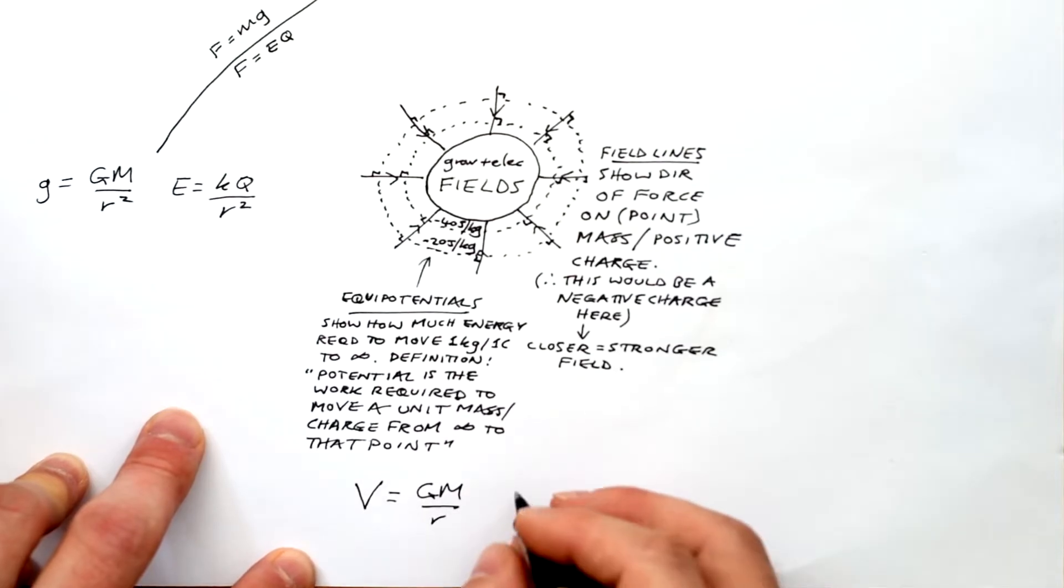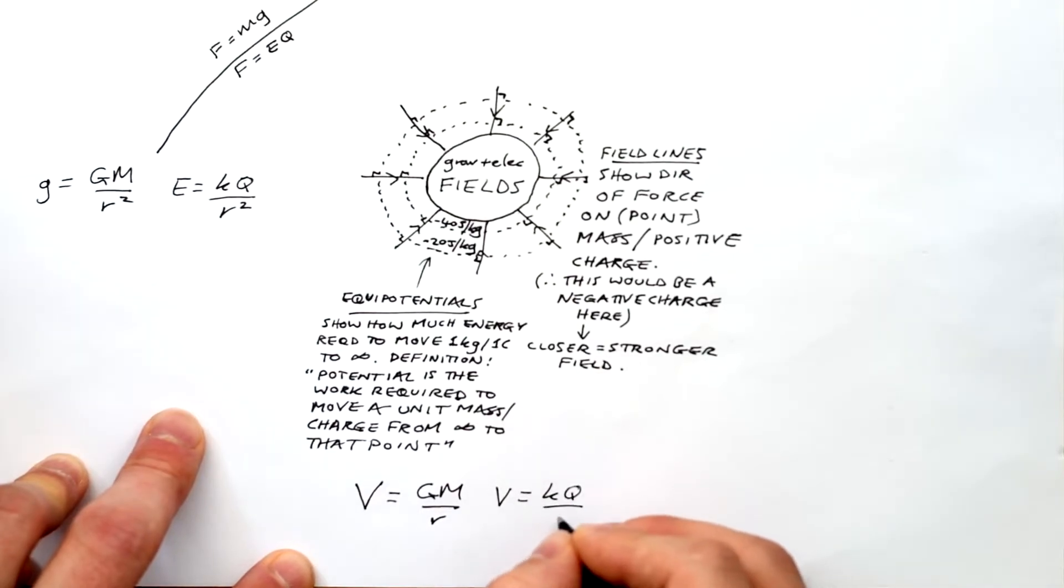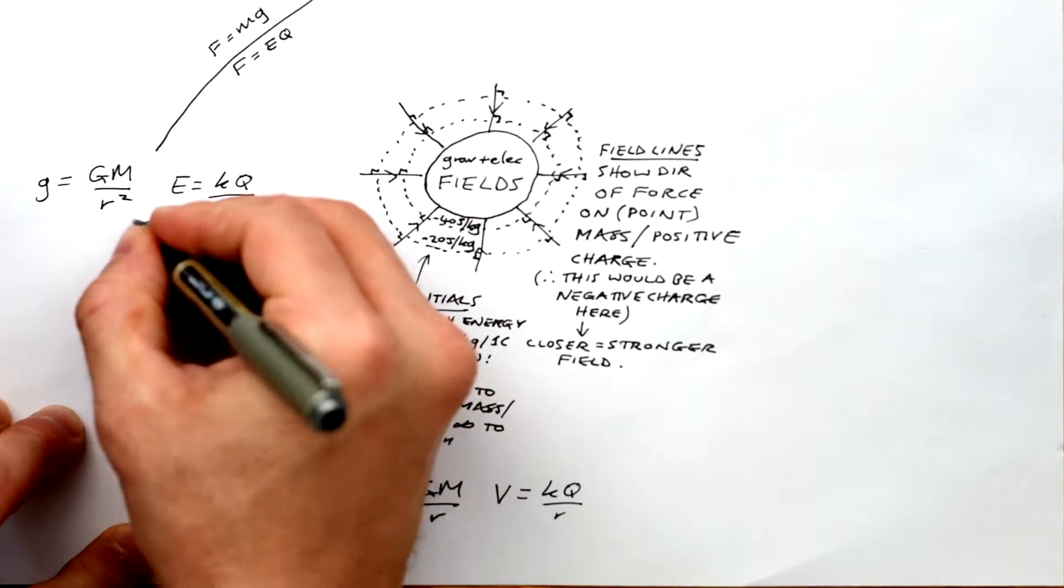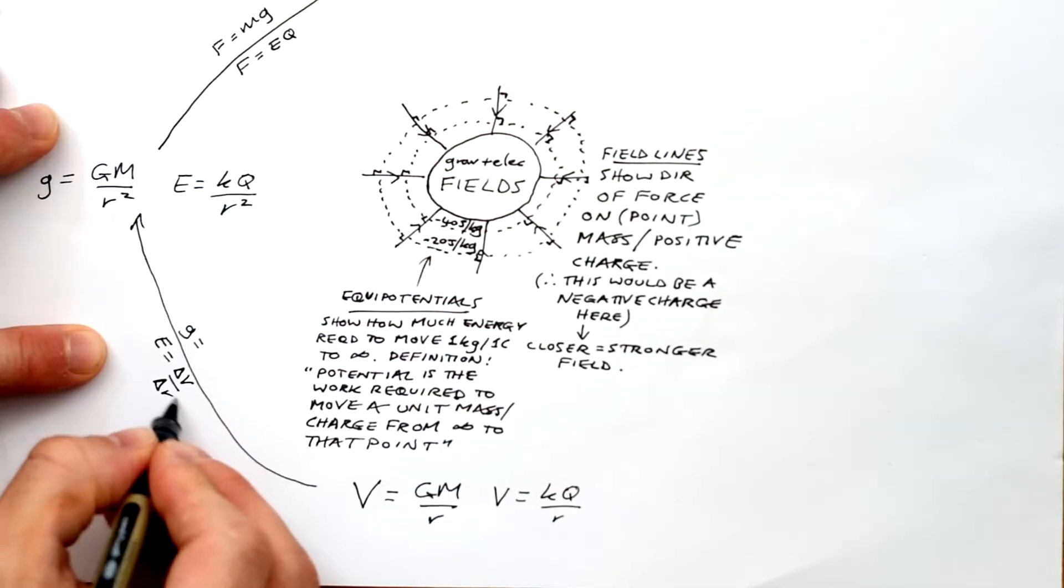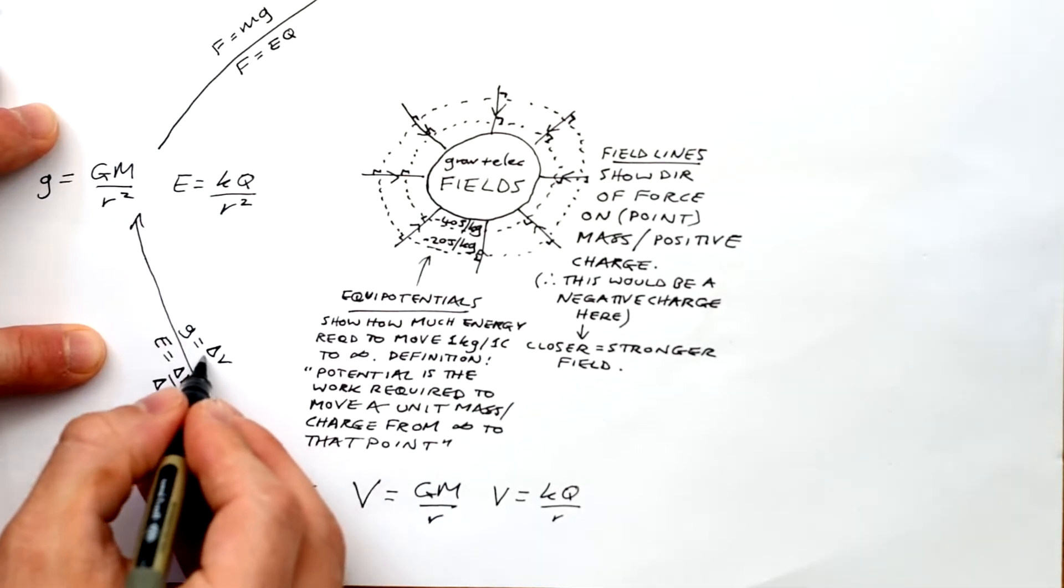Let's go back to potential. Potential is equal to minus GM over r. I'll write the minus in in a bit. And for electric, it's kQ over r. And to get from potential to field strength, we take change in potential and divide by change in distance.